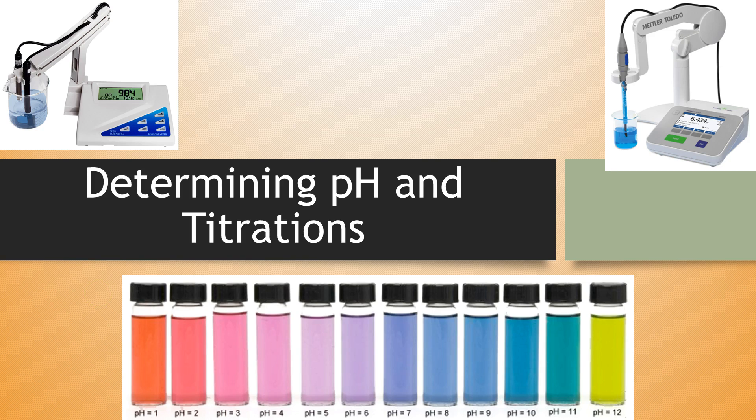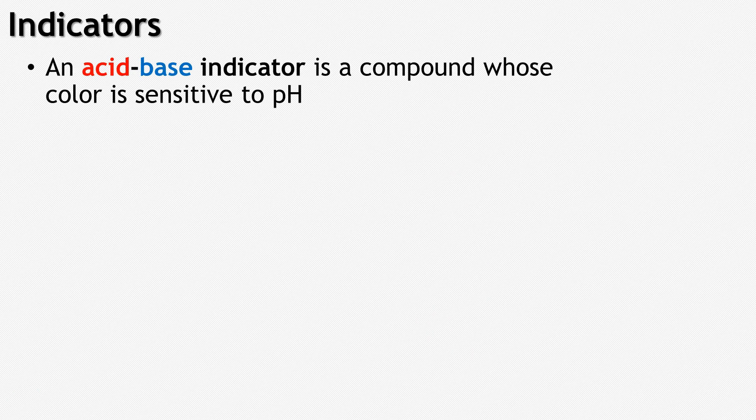Hello students of science. In this video we're going to talk about how you determine pH in titrations. An acid-base indicator is one of the ways that we can figure out whether or not something is going to be acidic or neutral. The indicator itself is a compound whose color changes — it's sensitive to pH.